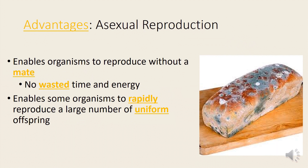The advantages of asexual reproduction: it enables organisms to reproduce without a mate. There is no wasted time and energy, and it enables some organisms to rapidly reproduce a large number of uniform offspring.